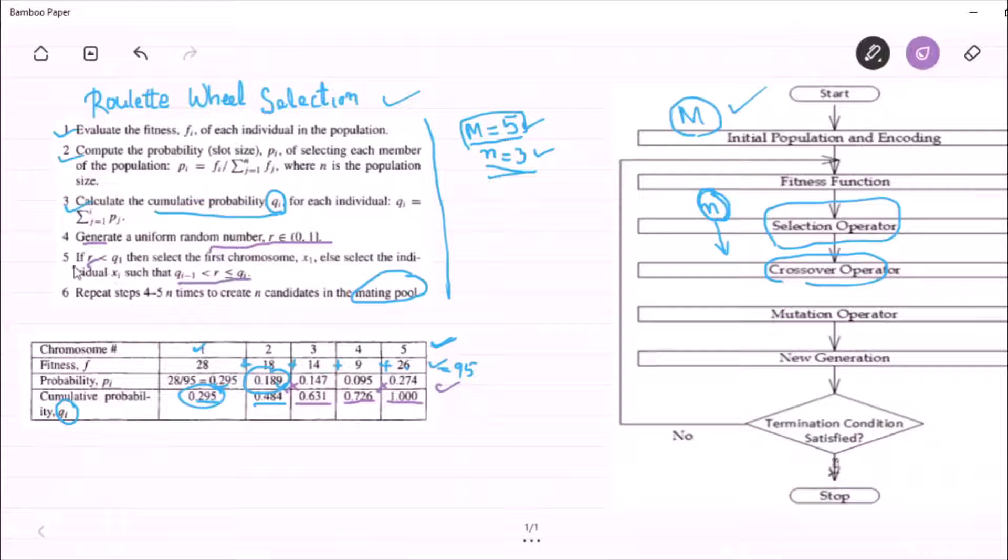So there are two logics. Either my r is less than q1 or my r is greater than q1. If r is greater than q1, this situation may rise. So look at the step number 6.